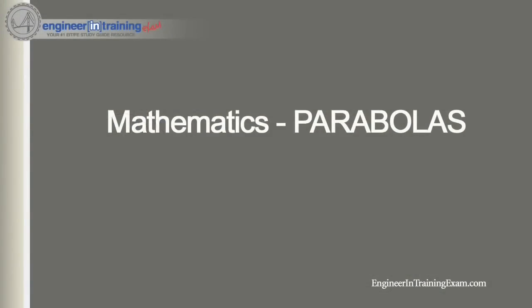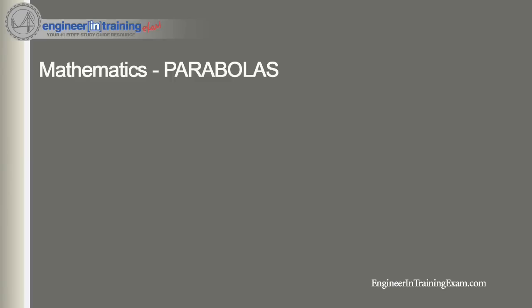Hey, what's going on everyone? It's Justin Dickmeyer from engineerandtrainingexam.com and in this video we're going to review parabolas. Let's recall that the general form of a quadratic equation f of x is equal to ax squared plus bx plus c. When we throw this equation up onto a graph, the output we get is called a parabola.